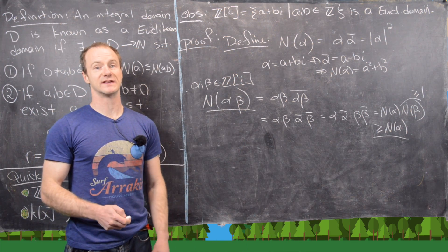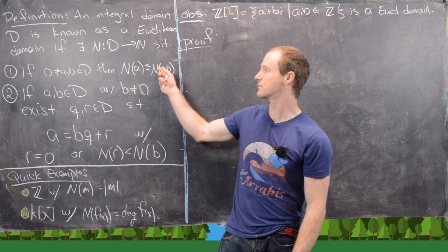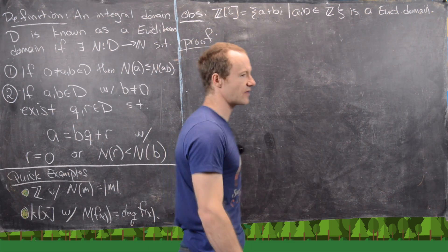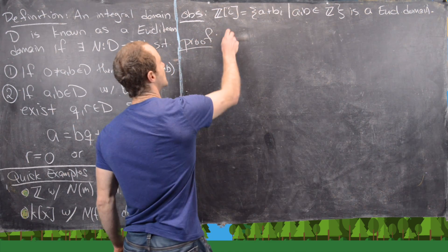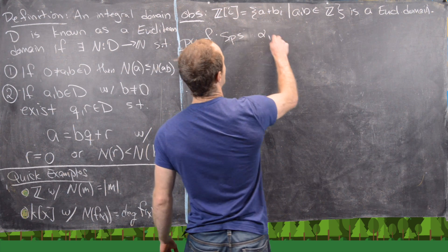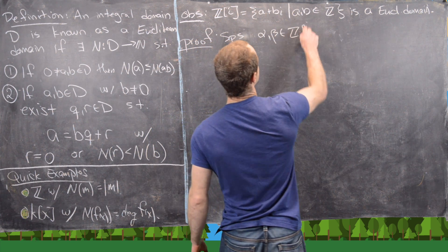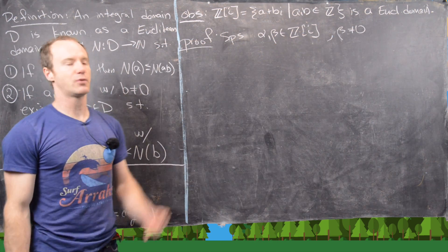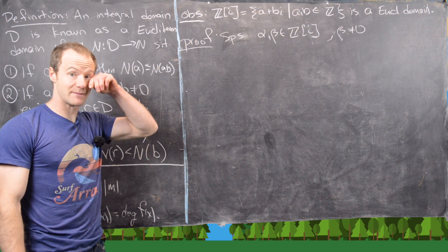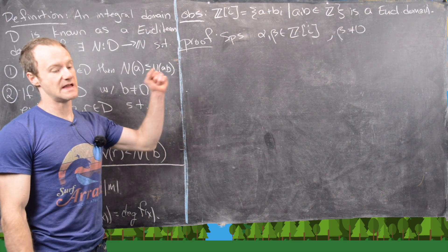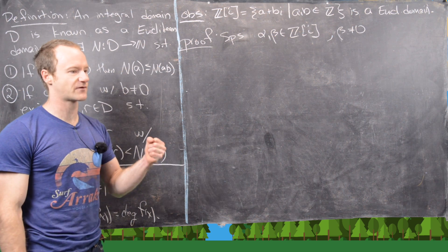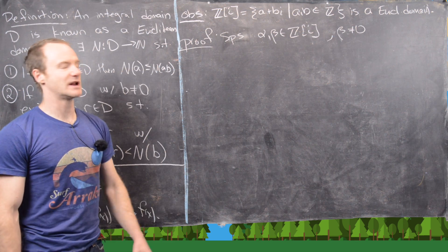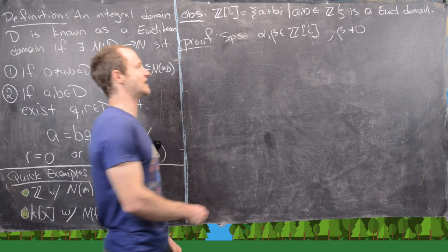Now we move on to the second property — the division with remainder property. Suppose α and β are Gaussian integers with β not equal to 0. Since β is not zero, it's invertible in the complex numbers, and we'll look at what's happening in ℂ first. Let's decompose: α = a + bi and β = c + di.